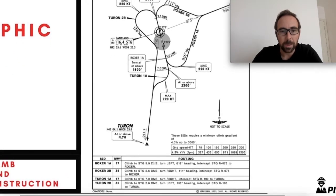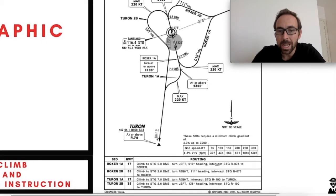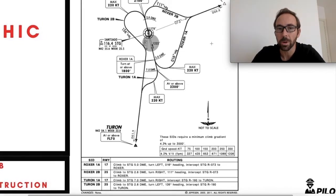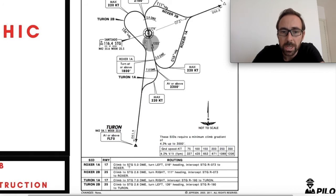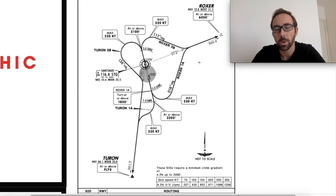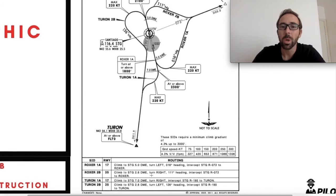The last part is the climb and routing instructions, which essentially puts into words what the graphic shows. For the ROXER 1 Alpha it says: runway 16, climb to Sierra Tango Golf 5 DME, then left turn heading 016, intercept Santiago radial 073, then fly outbound to ROXER. So the routing section gives you a textual description of exactly what to do — though it does not list altitude restrictions, so you still need to reference the graphic for those.